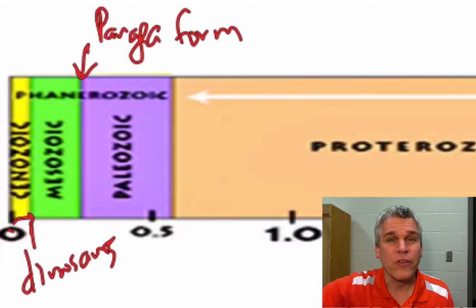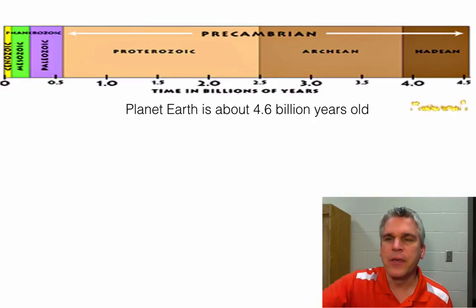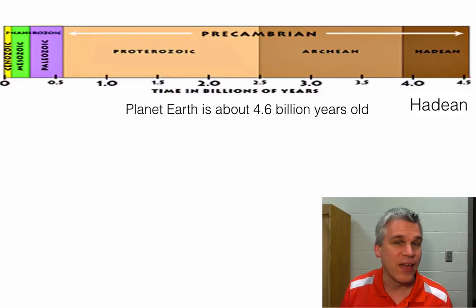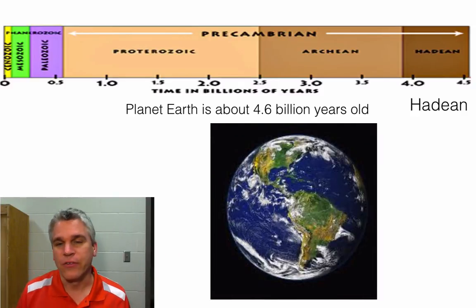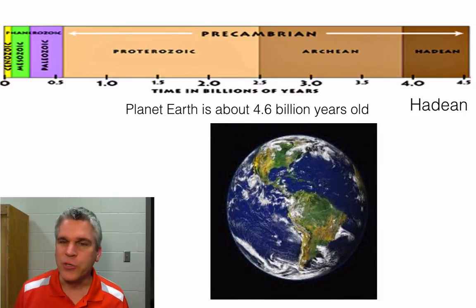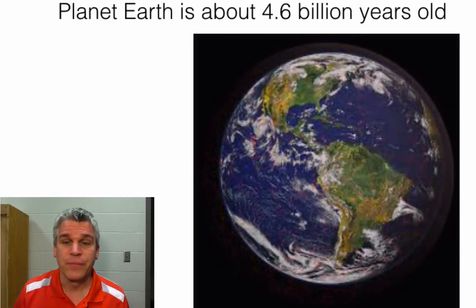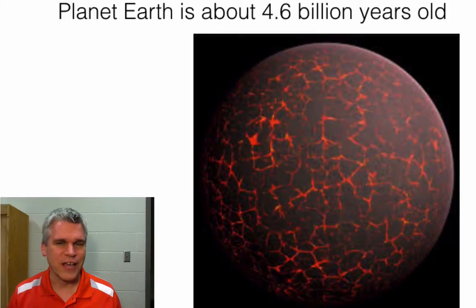When we think about what the Earth was like back then, go way back to what's called the Hadean Period. As the name implies — Hadean comes from the word Hades, which means kind of hell-like — the Earth was very different back then. When we think of the Earth, we think of a nice cool planet with lots of water, clouds, and some land. But the Earth was very different 4.5 billion years ago. They didn't have liquid water on there — it was a new planet, it was very hot.